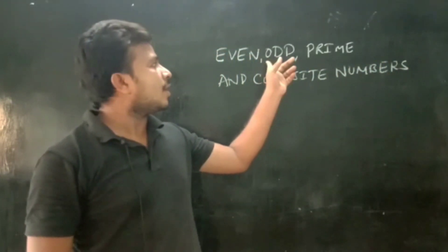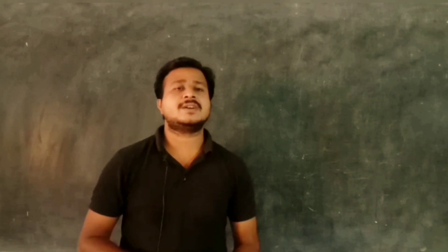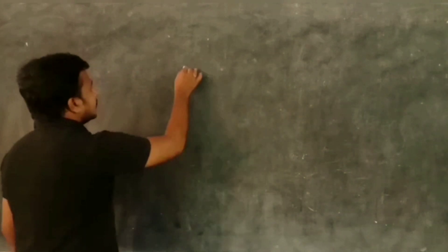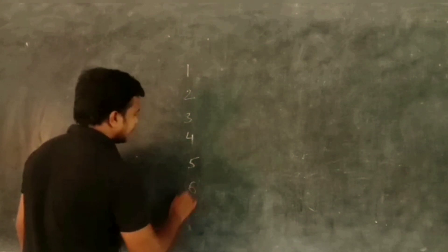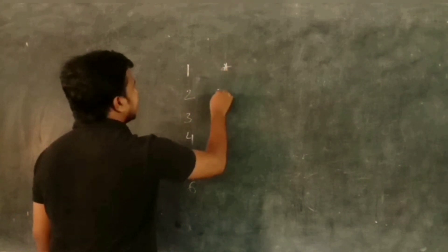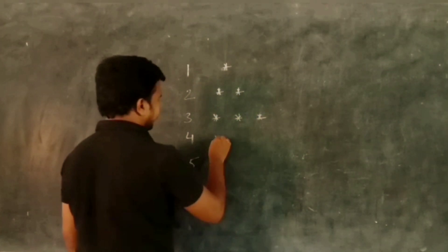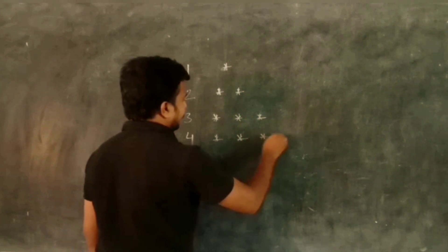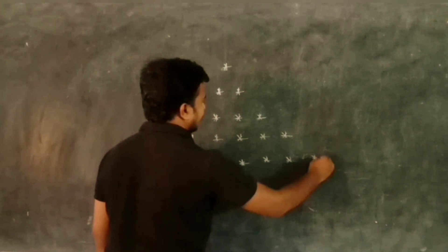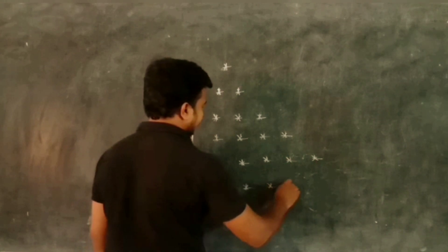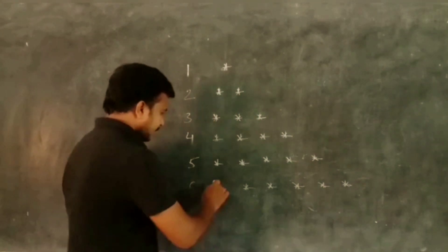Before going to the topic, a small activity about even numbers and odd numbers. Take some numbers: 1, 2, 3, 4, 5, 6. Take 1 star, take 2 stars, take 3 stars, 4, 5. So let's make them pairs — a pair is 2.